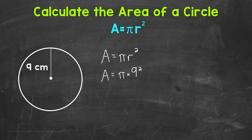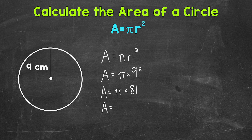That's a common mistake. Remember, 9 squared — when you square a number, that means multiply that number by itself. So 9 squared means 9 times 9, which is 81. We end up with pi times 81, which we can rewrite as area equals 81 pi.